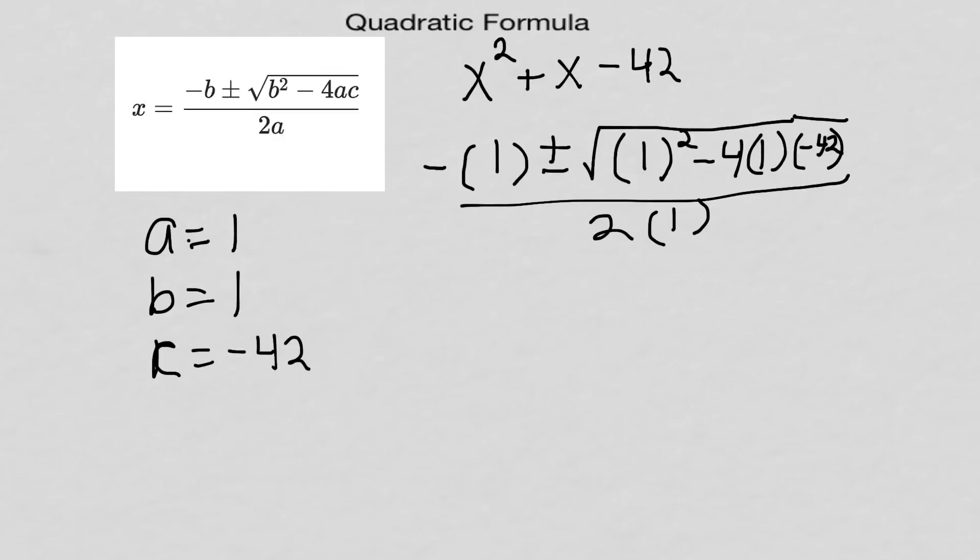Let's bring this down. I do this in three quadrants: the area in front of the plus minus, the square root, and the denominator at the bottom.